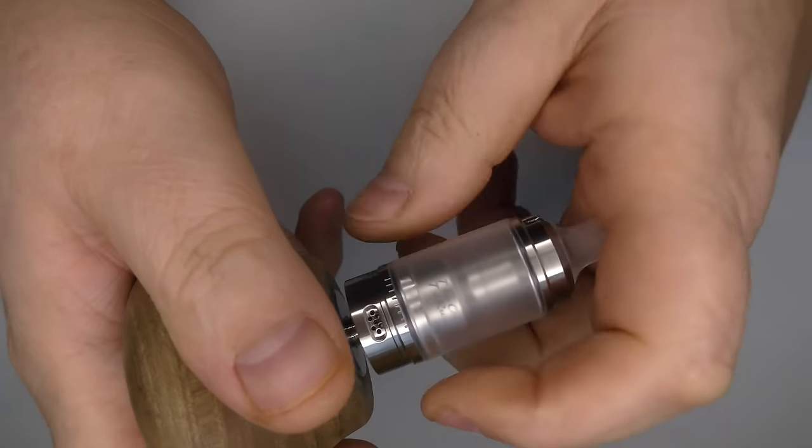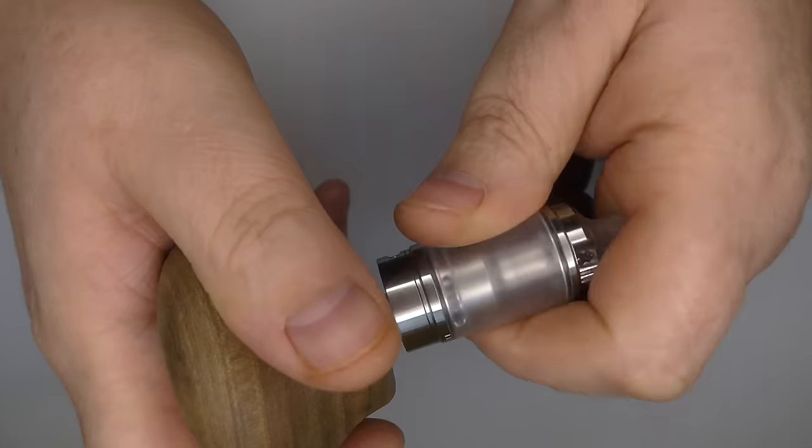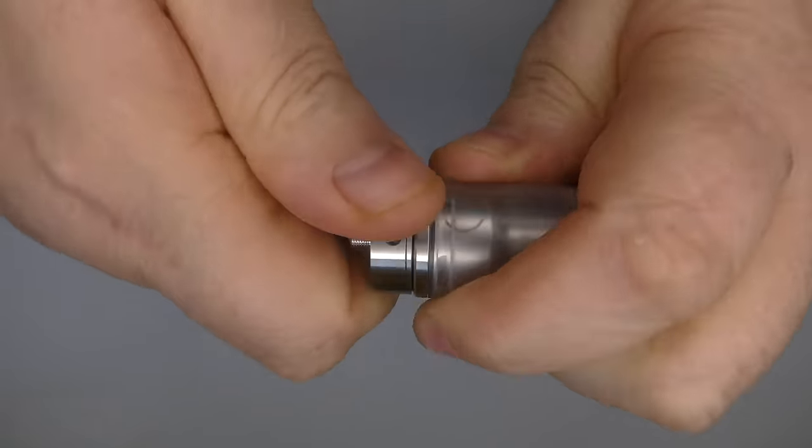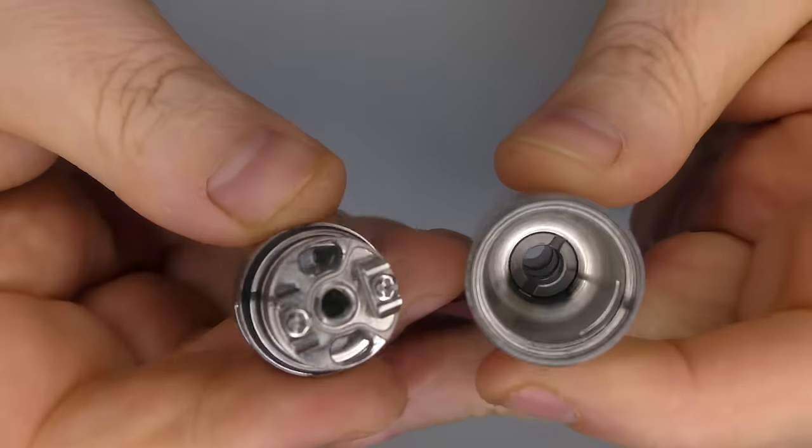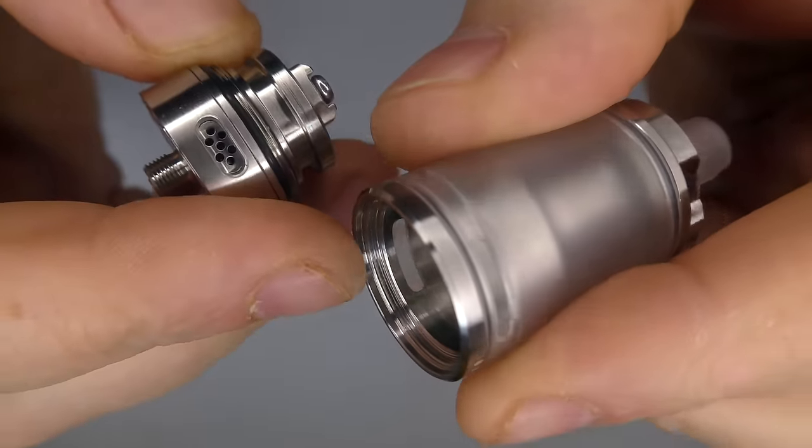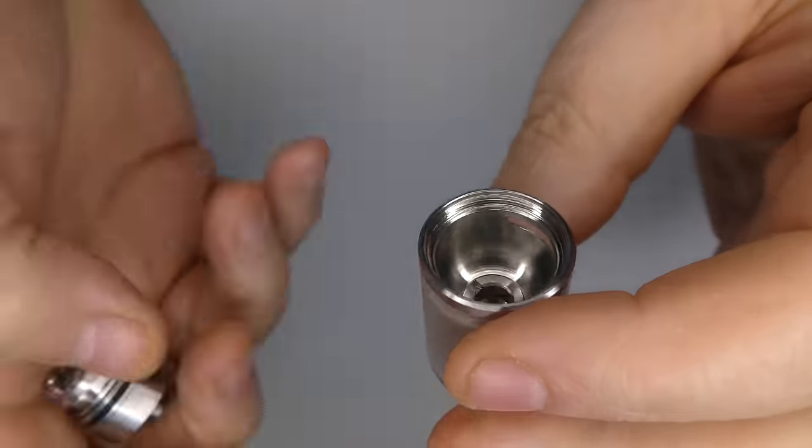So turn it clockwise, that's going to open the juice flow control. Anti-clockwise shuts it off. So when you're taking it off a mod, when you spin that, it's going to close the juice flow control and take the tank off. If you want to get into the deck, it just screws off. It's pretty straightforward and we just screw away here and out she comes.